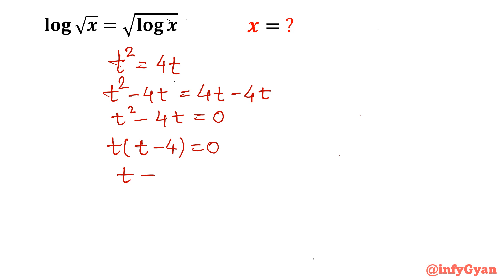So t equals 0 or t equals 4. From the bracket we have t equal to 4, and from the other factor, t equal to 0.